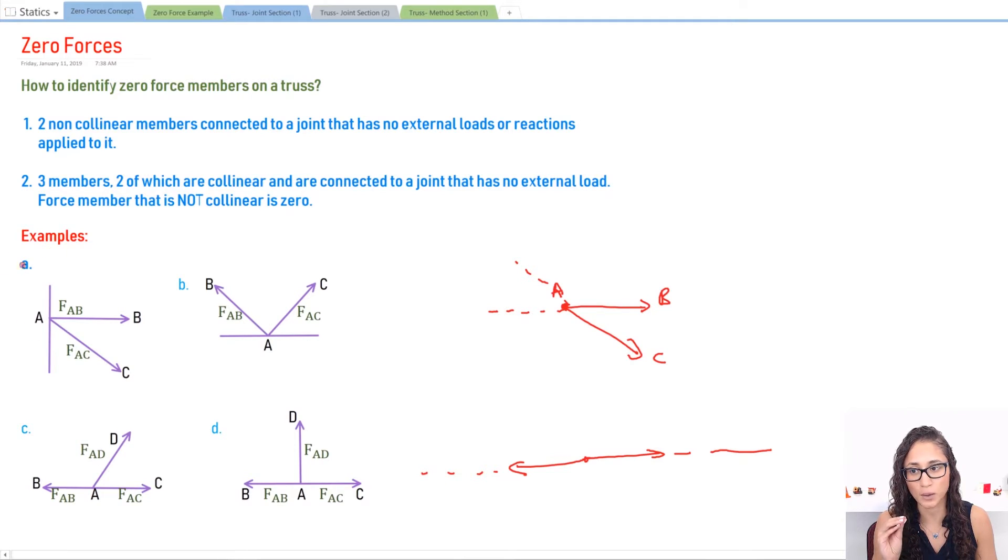So let's go back to example A. These two are not on the same line of action, so that means both of these members are going to be zero.